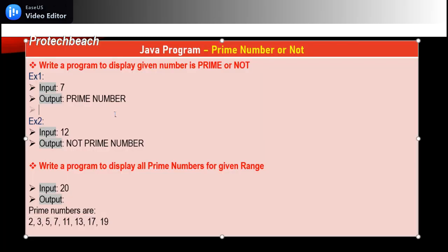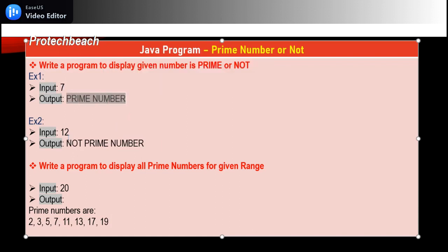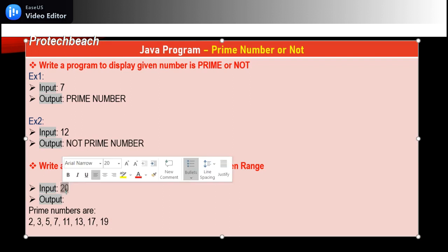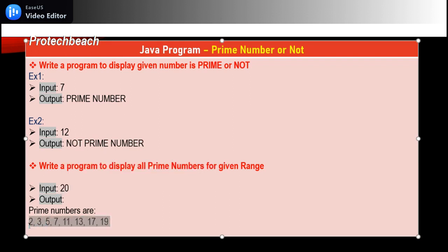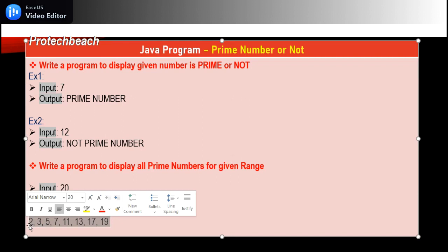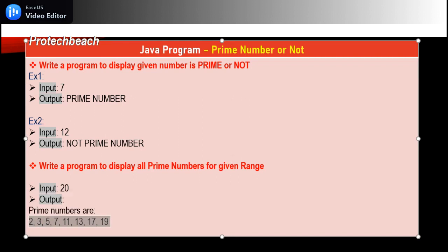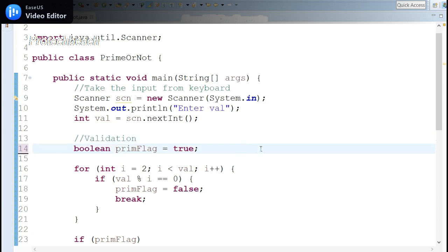We've completed the first scenario — checking whether a single given number is prime. Now let's see the second scenario: if the input is 20, display all prime numbers from 0 to 20. We'll do this by modifying just a few things in the existing code.